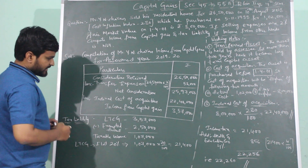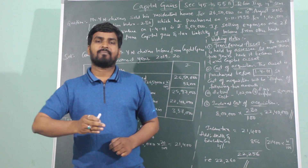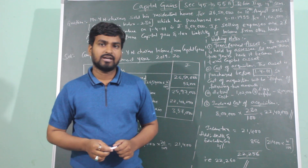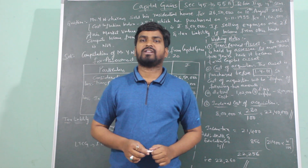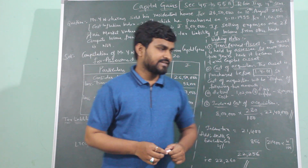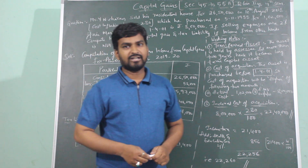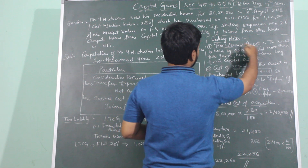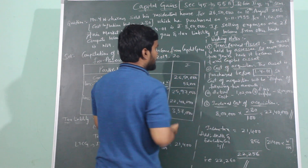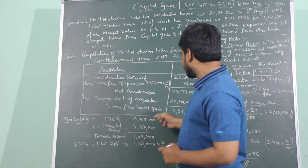This 3,57,000 is income from capital gain. Now we check whether it is long-term or short-term capital gain by looking at the period of holding. As this is a residential house, if the assessee held it for more than 2 years it is a long-term capital asset. Mr. Y.N. Charan purchased in 1988 and sold in 2018, so the period of holding is more than 2 years. Hence it is a long-term capital asset, and the profit of 3,57,000 is long-term capital gain.